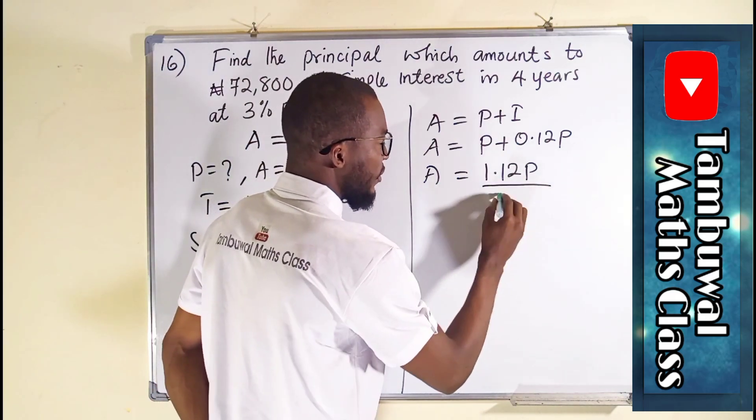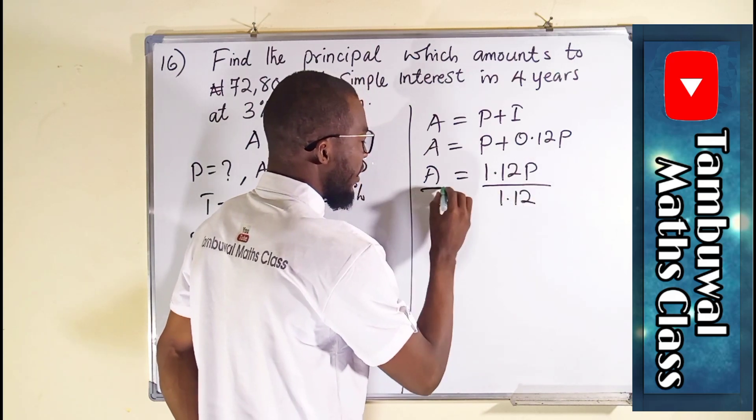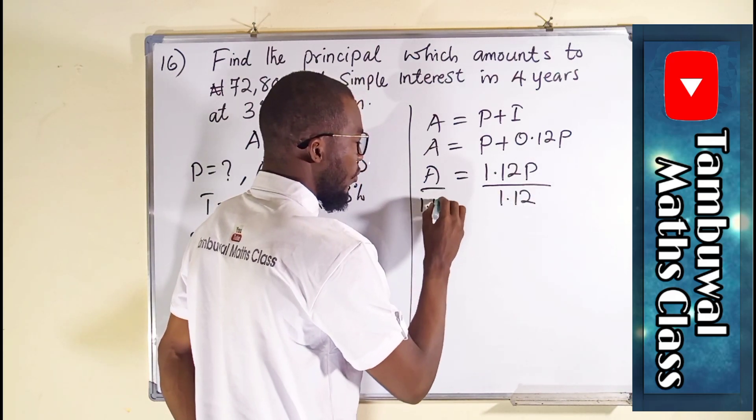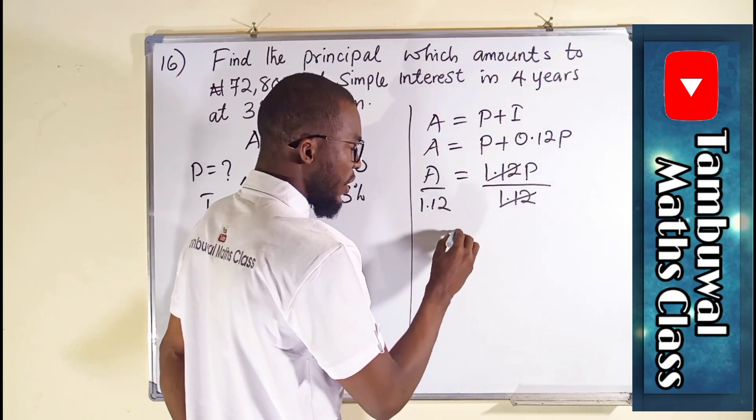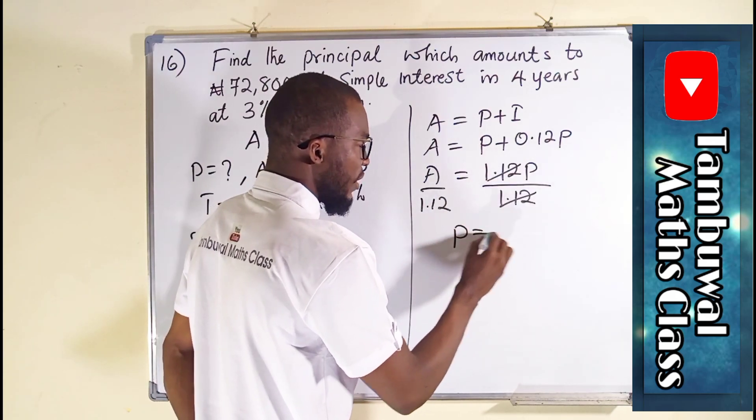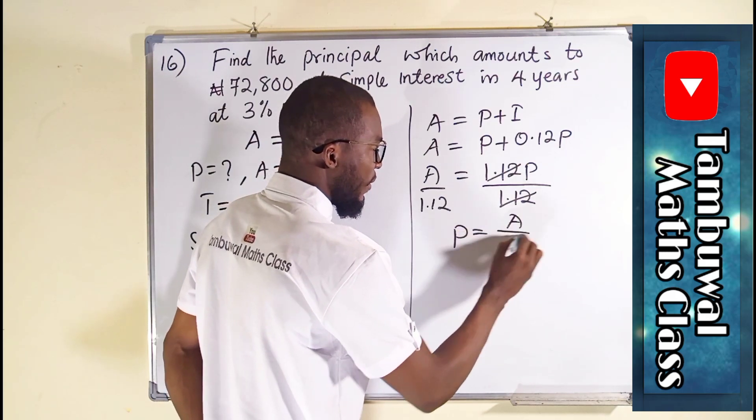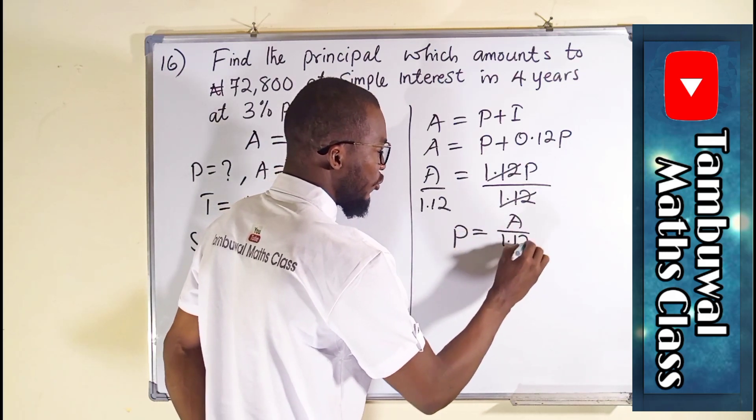Divide both sides by 1.12. This will cancel this, leaving only P, which we are looking for. P is now equal to A over 1.12.